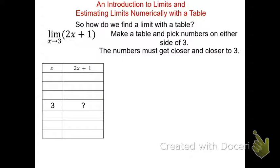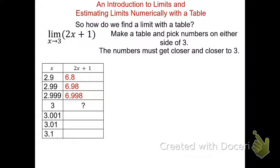Starting with numbers bigger than 3: 3.001, 3.01, and 3.1 — a thousandth, a hundredth, a tenth away. For the left side, we pick numbers smaller than 3, also a thousandth, hundredth, and tenth away. Plugging into 2x + 1: for 2.9 we get 6.8; for 2.99 we get 6.98; continuing, we get 6.998. These three values are converging — going from 6.8 to 6.98 to 6.998 — it appears to be approaching 7.